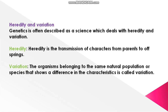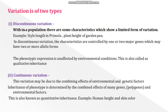Variation: Organisms belonging to the same natural population or species that show differences in characteristics are called variation. Variation is of two types. The first type is discontinuous variation — within a population, some characteristics show a limited form of variation. Examples: style length in Primula, and plant height in garden pea. In discontinuous variation, characters are controlled by one or two major genes which may have two or more allelic forms.